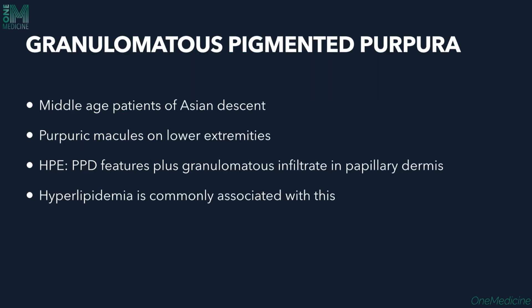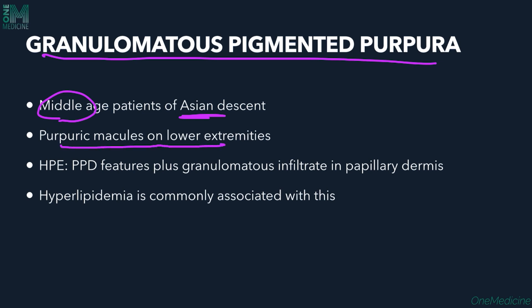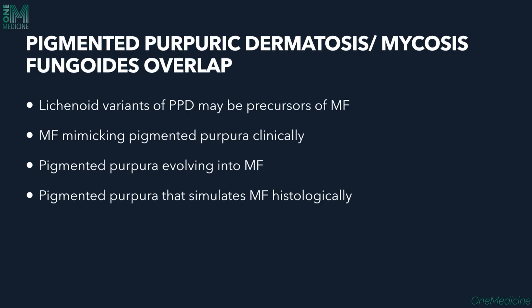The granulomatous variety — granulomatous pigmented purpura — mostly affects middle-aged people of Asian descent. It presents with purpuric macules on the lower extremities similar to other PPDs, but the distinguishing histological feature is granulomatous infiltrate in the papillary dermis. Hyperlipidemia is sometimes associated with this condition.